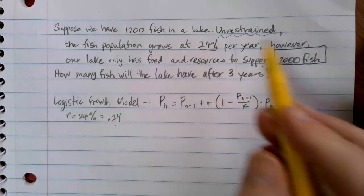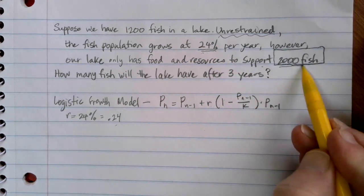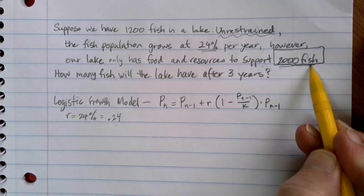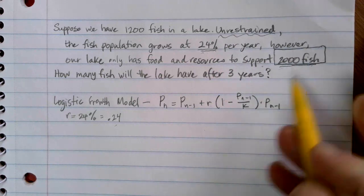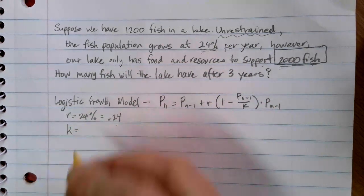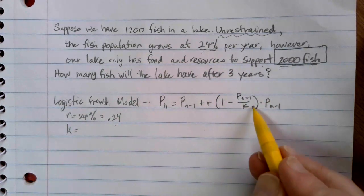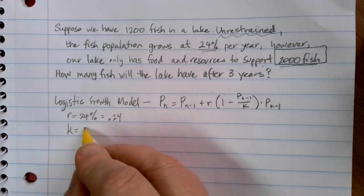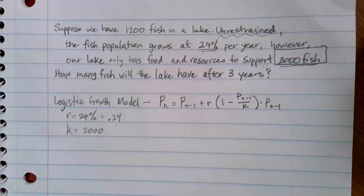The next important piece of information when we were knowing this was in a logistic equation was this limiting capacity here, that 2,000 fish. That is going to be our K value in our formula, and it shows up down here. So K is equal to that 2,000, the limiting factor that we have.